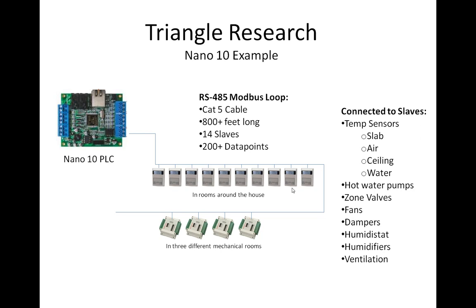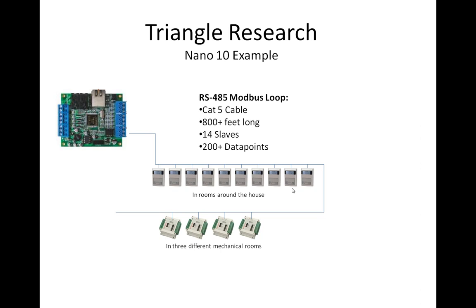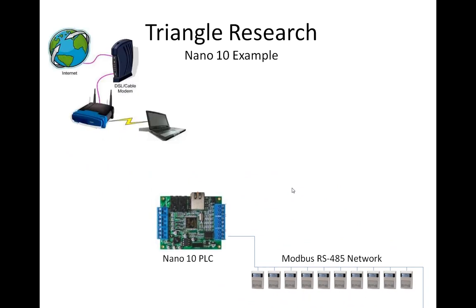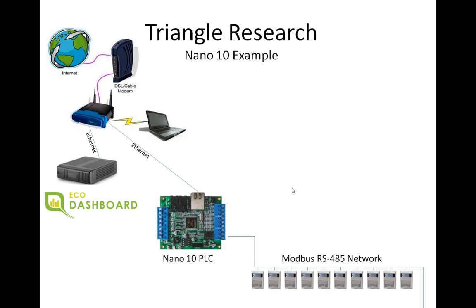So as a standalone system, the Nano 10 handles all of this all by itself. To add a more advanced user interface, the Nano 10 is also connected into the router in the house, and the Nano has its own built-in web server. We've also developed an add-on product called the Eco Dashboard, which is a small server that also plugs into the router and is configured to communicate directly to the Nano 10. They share information back and forth.